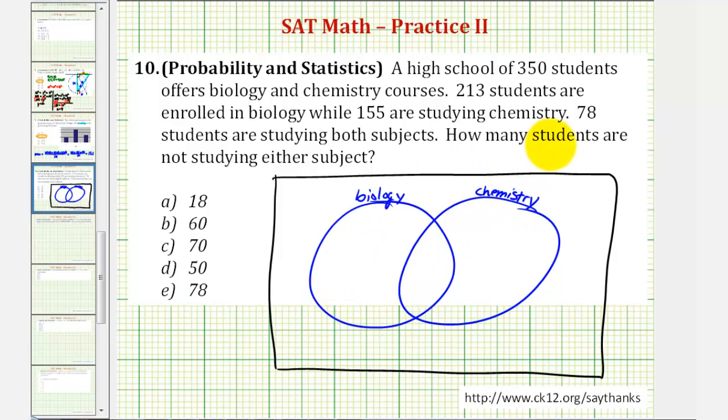Now we'll work our way backwards to complete this Venn diagram. We're told that there are 78 students taking both chemistry and biology, which means those 78 students must be in this set that includes both biology and chemistry. Next, we know that 155 students are studying chemistry, but this 155 also includes this 78. So the students only taking chemistry would be 155 minus 78, which is equal to 77.